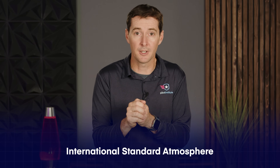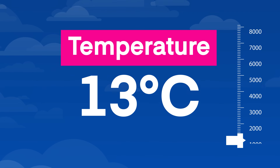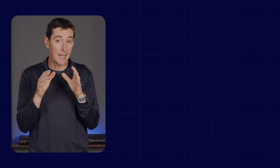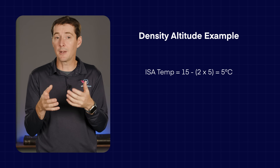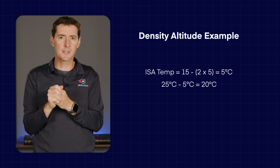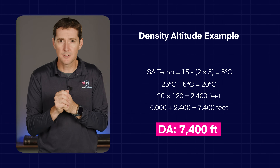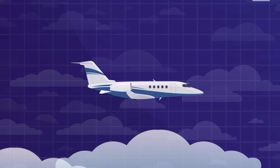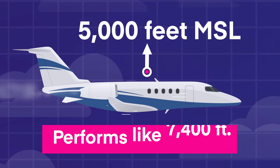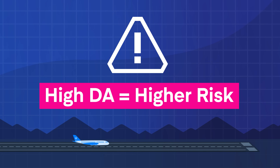ISA stands for International Standard Atmosphere. At sea level, the standard temperature is 15 degrees Celsius, and it decreases by about 2 degrees for every 1,000 feet of altitude. So at 5,000 feet, the ISA temperature is around 5 degrees Celsius. If the actual outside temperature is 25 degrees Celsius at 5,000 feet elevation in summer, that's 20 degrees above standard. Multiply that by 120 and add it to the pressure altitude, giving a density altitude of 7,400 feet — meaning the airplane will perform as if it were at 7,400 feet even though the altimeter says 5,000 feet.